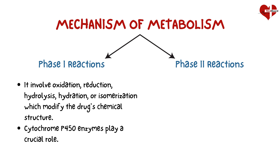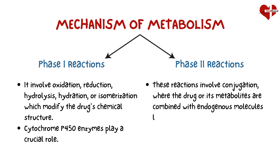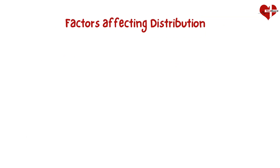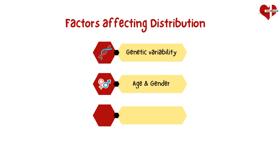Phase 2 reactions involve conjugation, where the drug or its metabolites are combined with endogenous molecules like glucuronic acid, forming more water-soluble metabolites. Some factors that can affect metabolism include genetic variability, age, gender, and disease conditions.